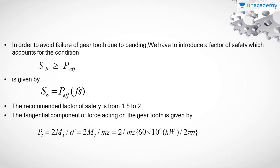So we have the condition to resist failure: Sb greater than P_effective. And it is given by SB equals P_effective into FS, so we introduce a factor of safety to restrict the breakage of the gear tooth and avoid failure due to bending actions. We can use the value of factor of safety in the range of 1.5 to 2. This equation is used for the design of the gear tooth to avoid failure due to the bending caused by the tangential component of loading during power transmission.